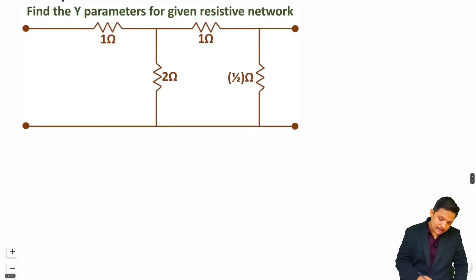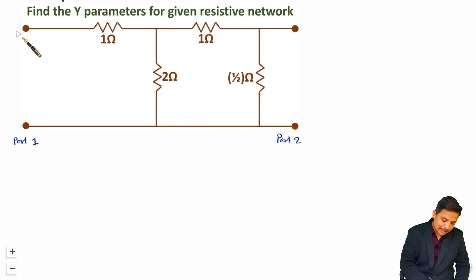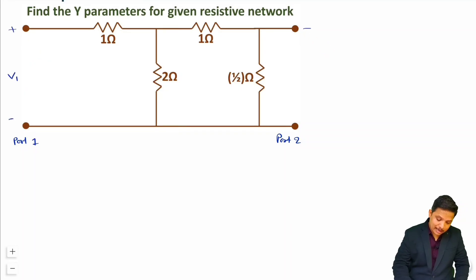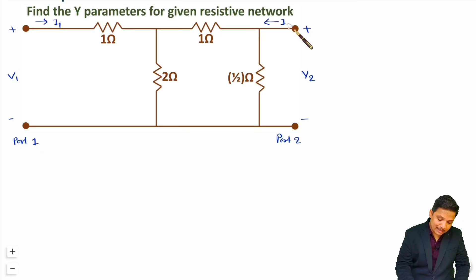The question is: simply find Y parameters for the given resistive network. We consider port 1 and port 2. At port 1 we provide voltage V1, at port 2 we have voltage V2, current going inside at port 1 is I1, and current going inside at port 2 is I2.